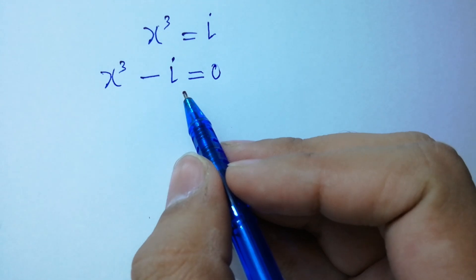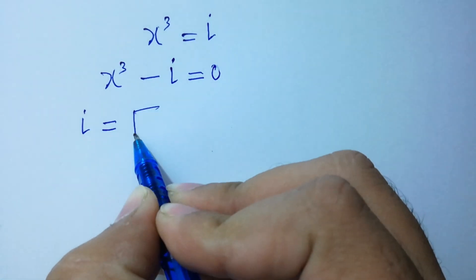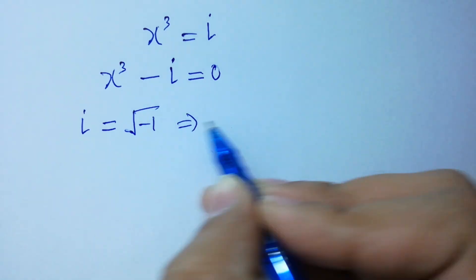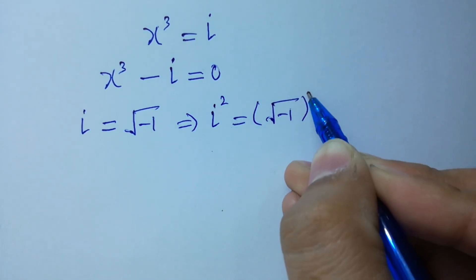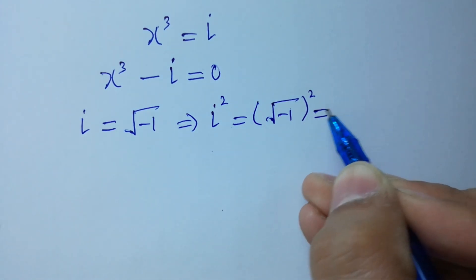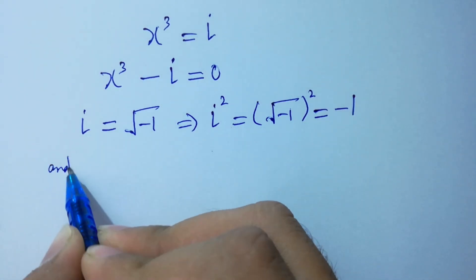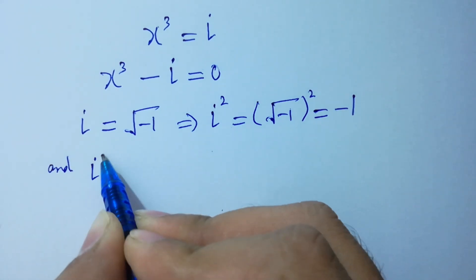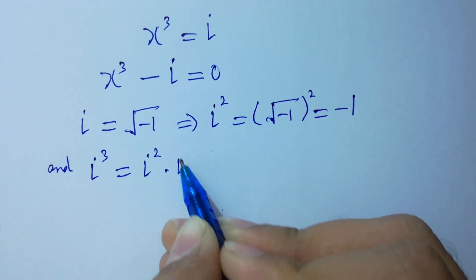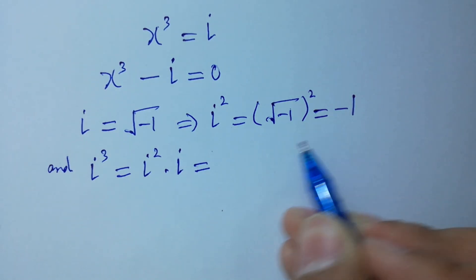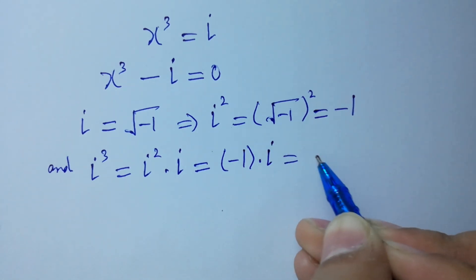As we know, i equals the square root of -1. Taking the square on both sides, i² = -1, since the square cancels from the square root. And i³ = i² × i = (-1) × i = -i.